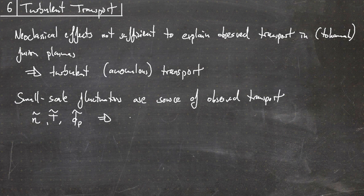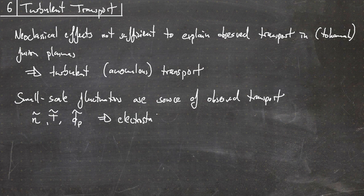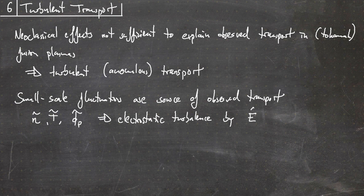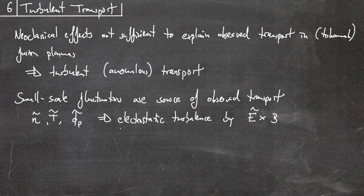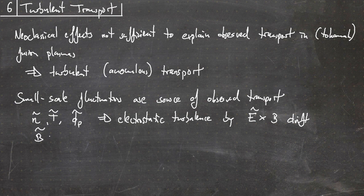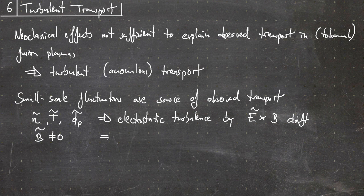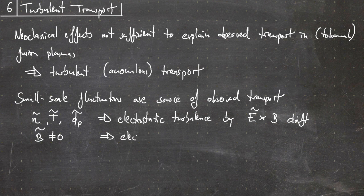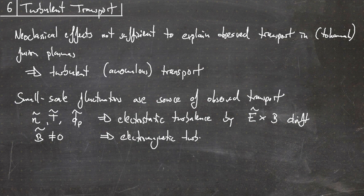If we observe these, then we call this electrostatic turbulence, which is created by the fluctuating electric field, fluctuating density, temperature, and plasma potential, leading to E cross B drift. If we have also magnetic fluctuations, then we talk about electromagnetic turbulence, caused by micro magnetic islands.